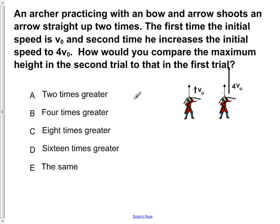An archer practicing with a bow and arrow shoots an arrow straight up two times. The first time the initial speed is V-naught, and the second time he increases the initial speed to four times V-naught. How would you compare the maximum height in the second trial to that in the first trial?